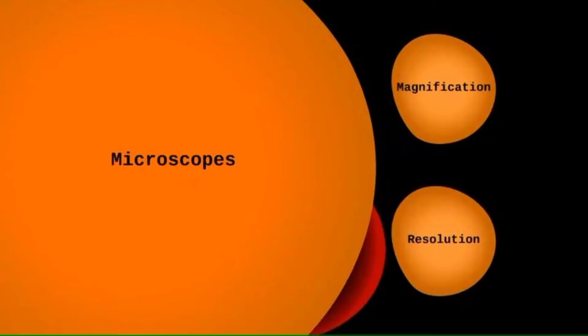Another key difference is that with an electron microscope the specimen you're looking at must be dead, whereas with a light microscope you can also look at living specimens — so if you've got cells you want to check, you can look at them whilst they're still alive. With an electron microscope, a beam of electrons is used to magnify the image, whereas with a light microscope that is done with a beam of light.